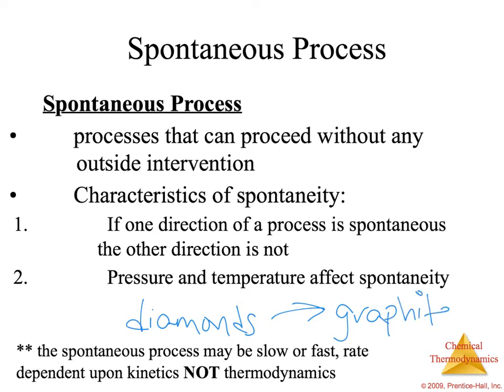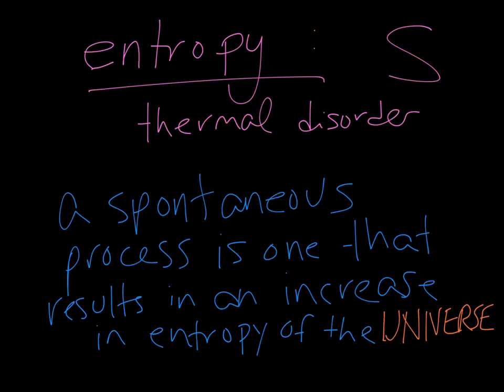I will show you my engagement ring in class — it's a diamond. You cannot see it turning into graphite. This is a very slow process, but it is spontaneous. If we all lived to the end of time, diamonds would become graphite. Whether or not something is spontaneous is not really related to how slow or fast it is.